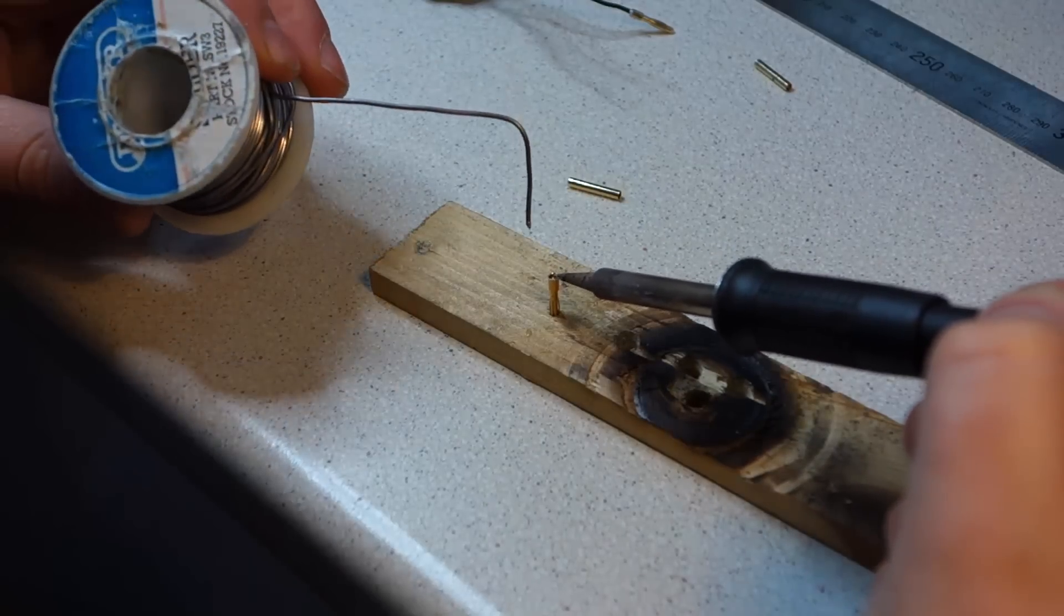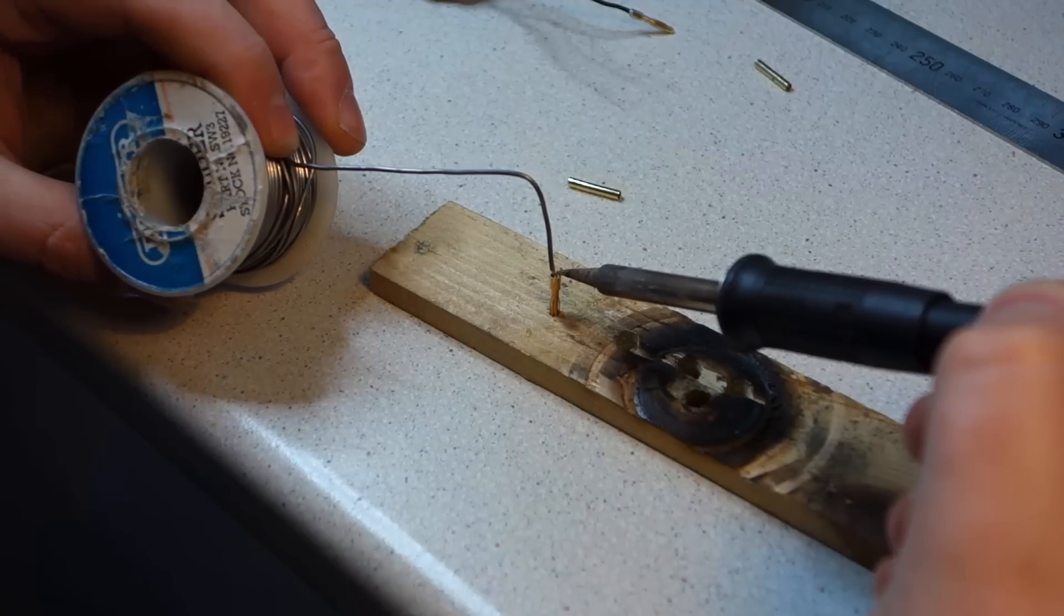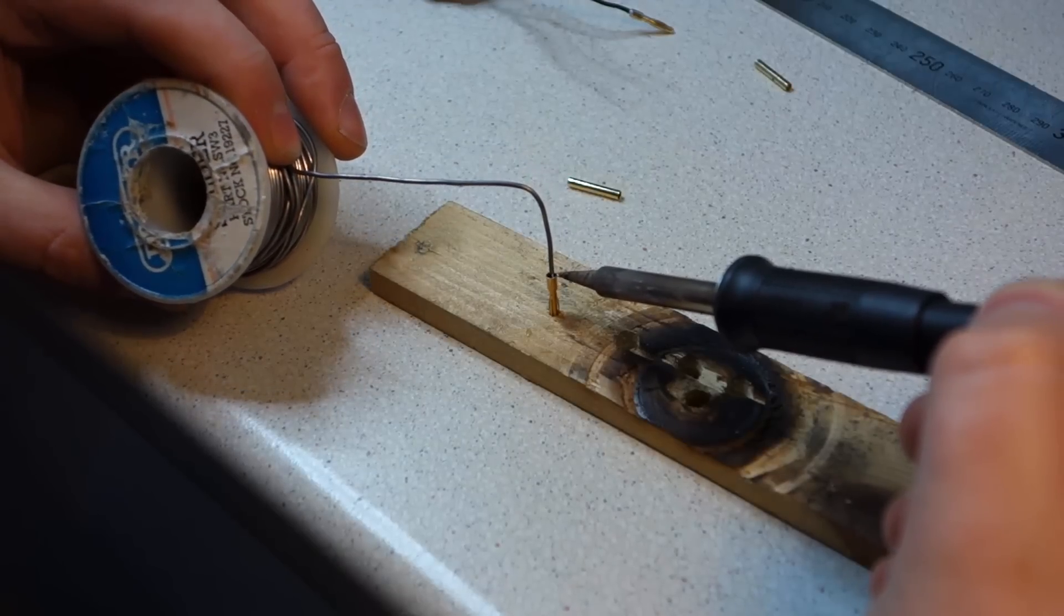Apply the soldering iron to the connector to heat it up and after a second or two you should be able to fill it with the solder. Do this about 3 quarters full.